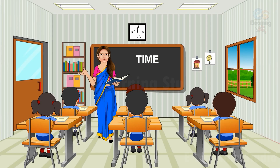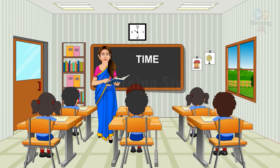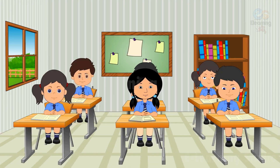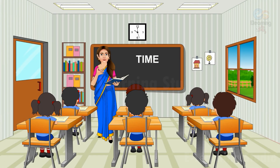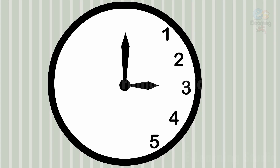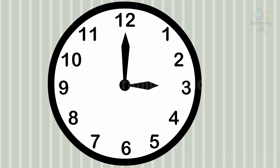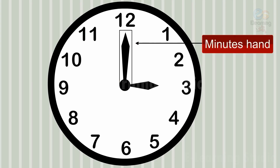Dear children, did you notice the clock in the background? Yes, a clock tells us the time. It has 12 numbers. It has a long hand, or minutes hand, and a short hand, or hours hand.